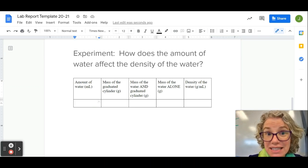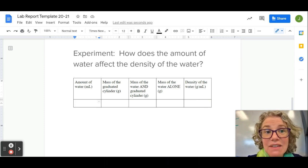Here's my independent variable, the amount of water. This is my dependent variable, the density of the water. But I had to have a spot to record those other numbers, and so that's how I ended up with these extra spots in between.